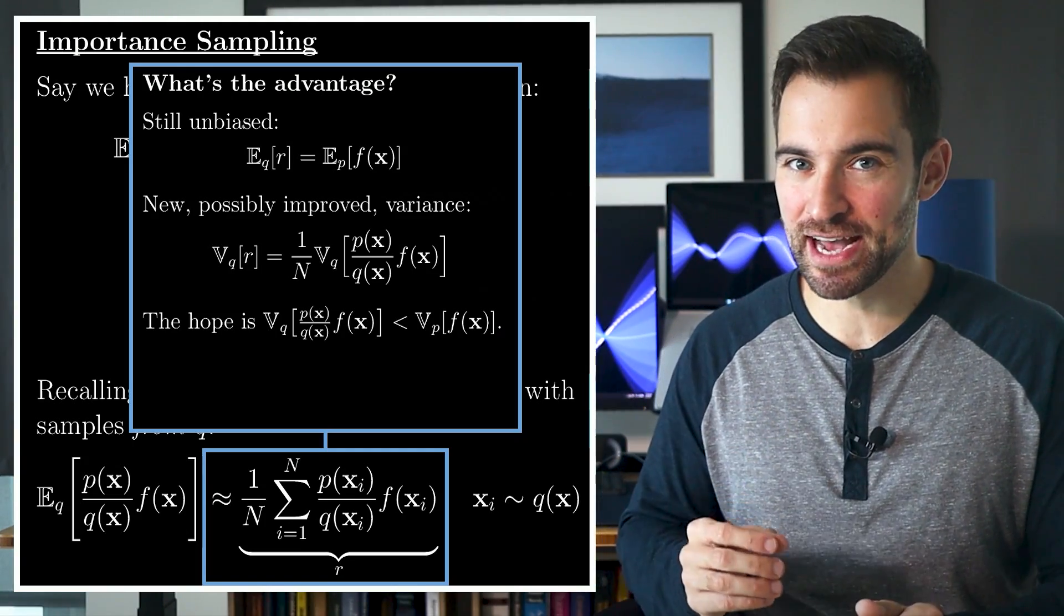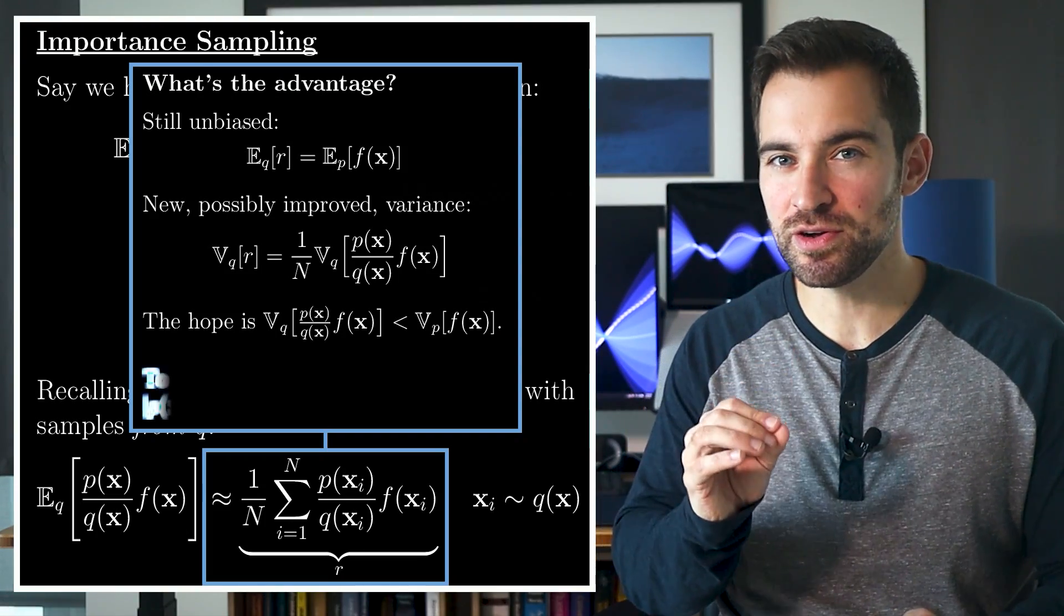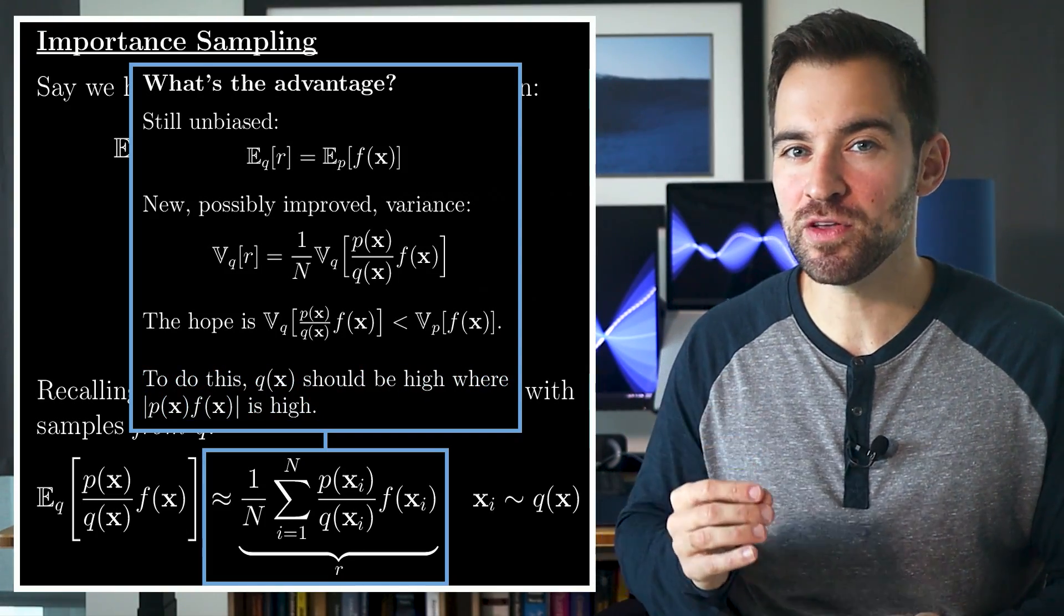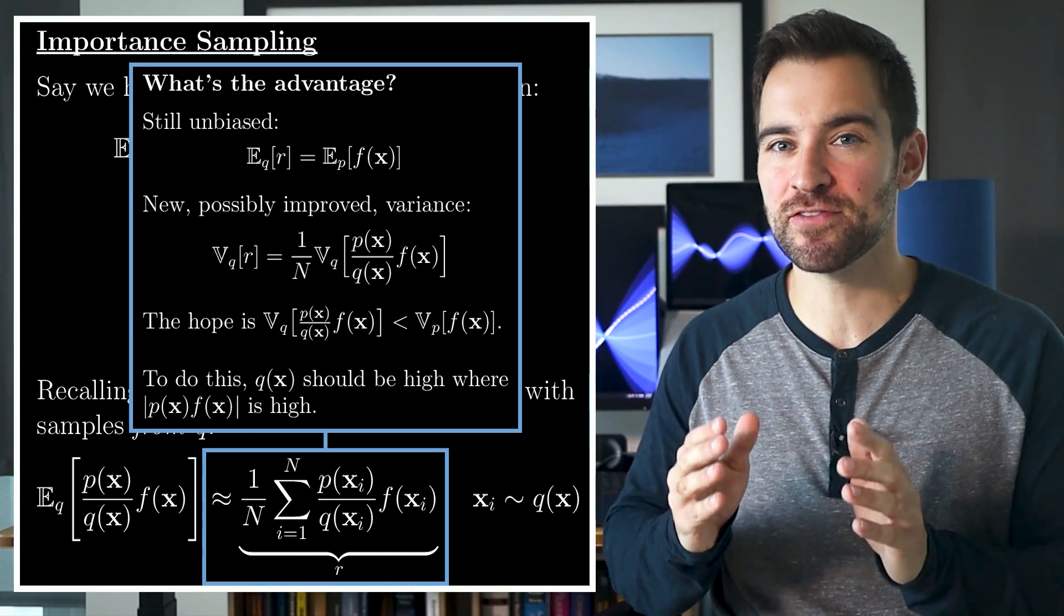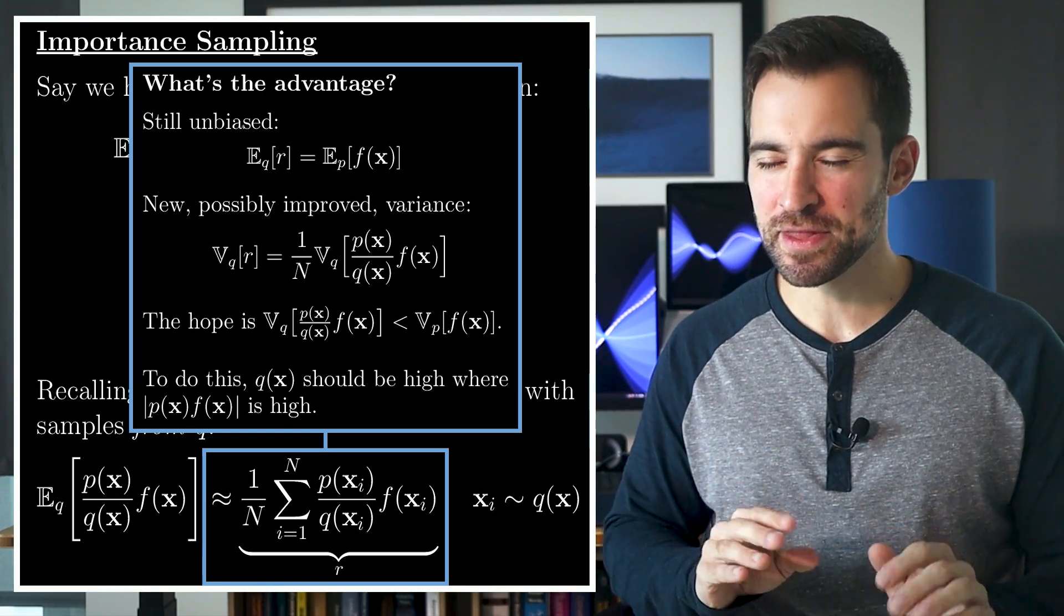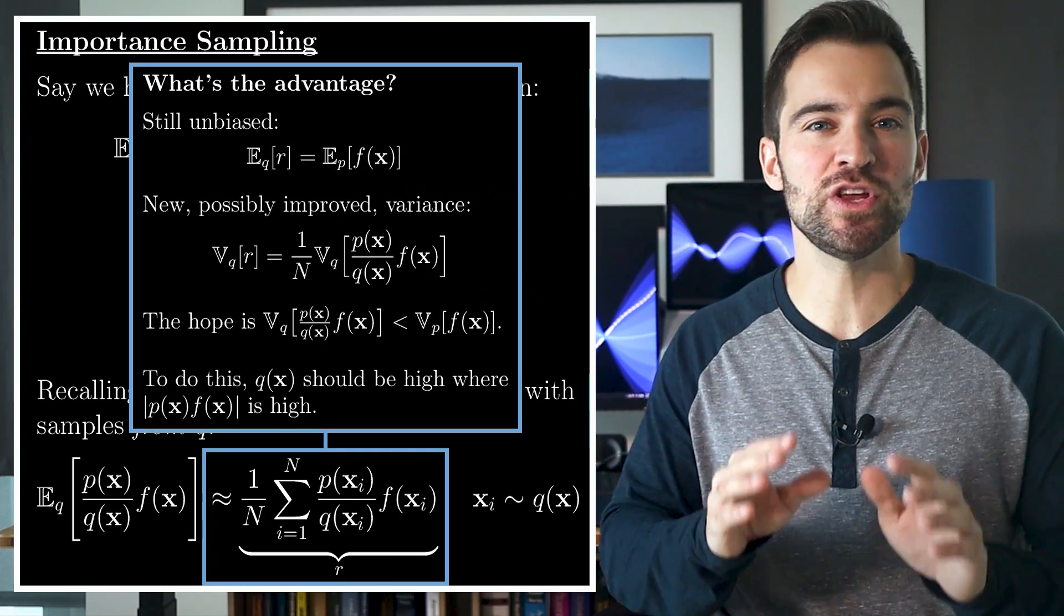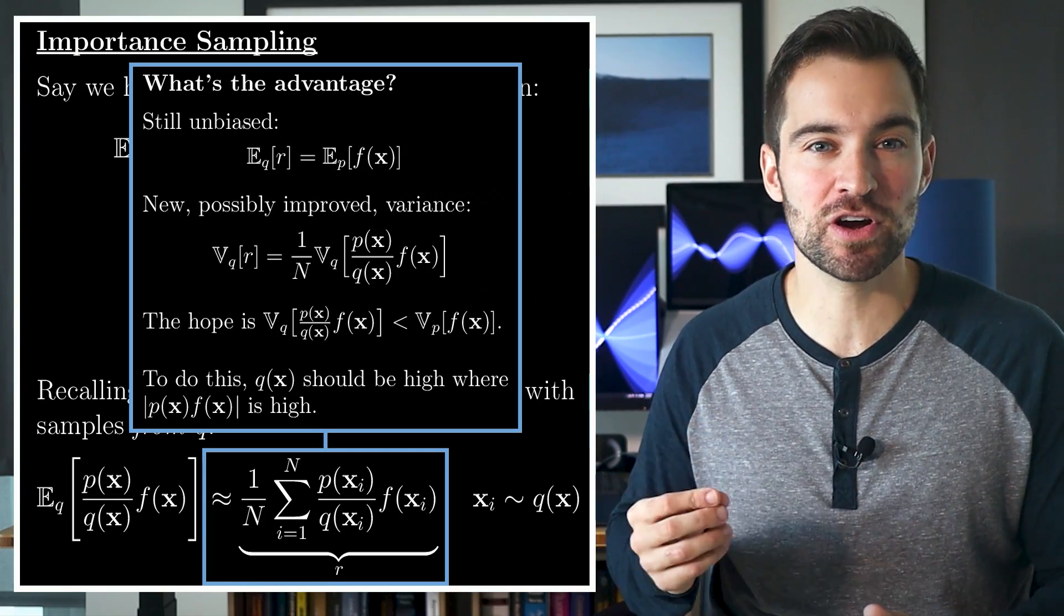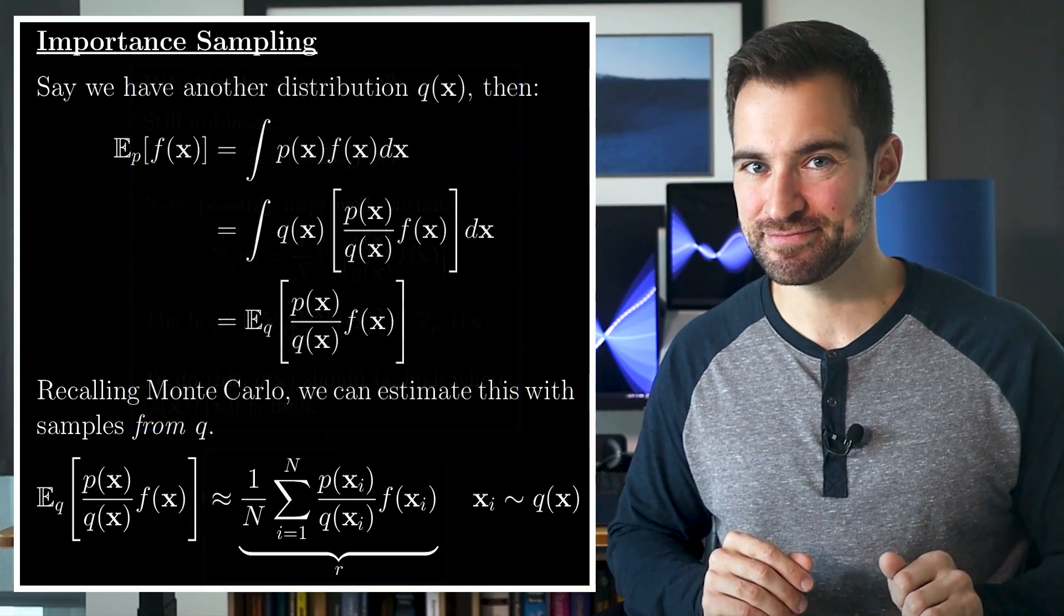Now, to do that, it turns out q should say x's are likely wherever the absolute value of p(x) times f(x) is high. That's a key result, which I'm not proving, but it kind of makes sense when you recognize that we are trying to estimate the area under the p times f curve. Got it?